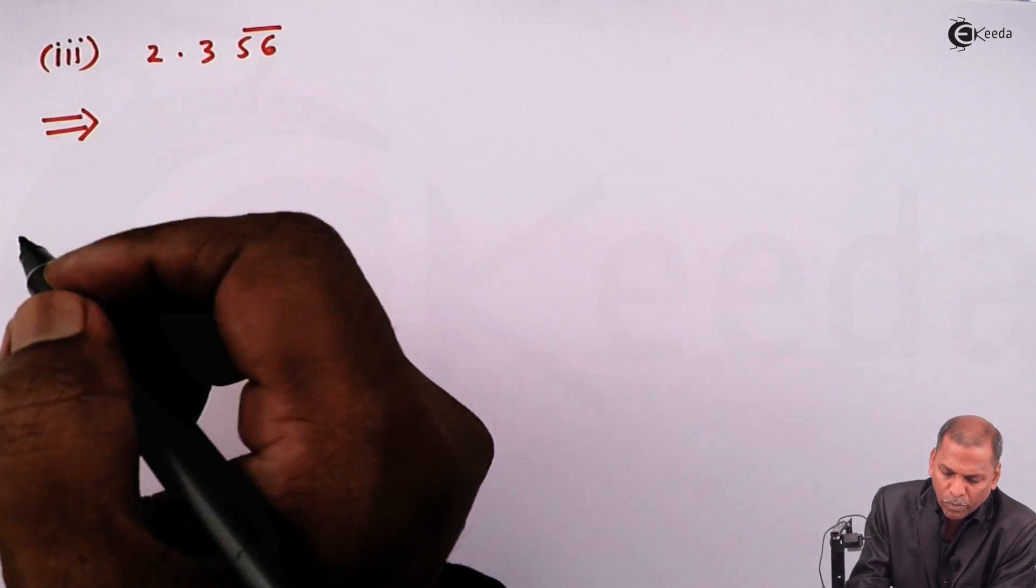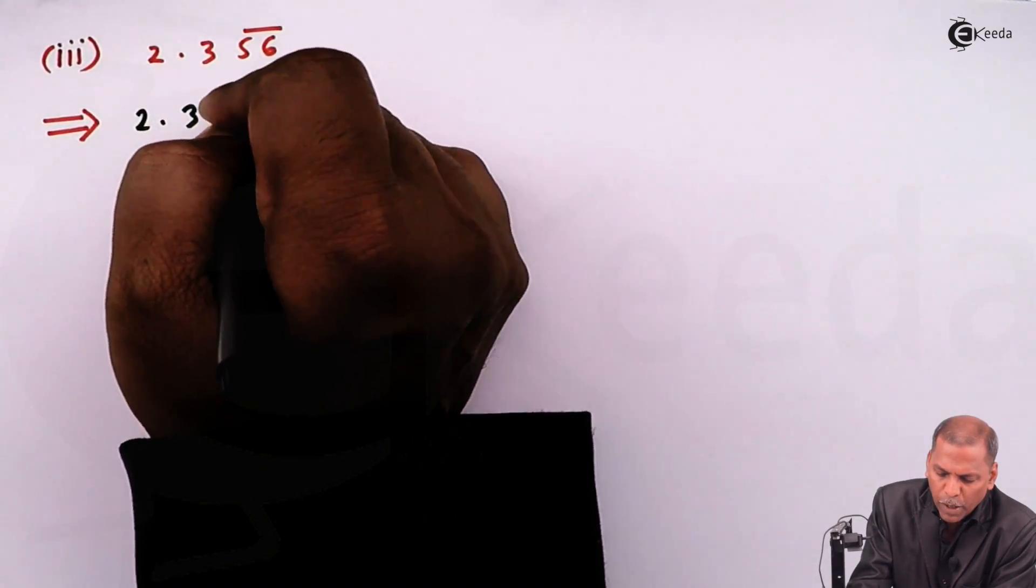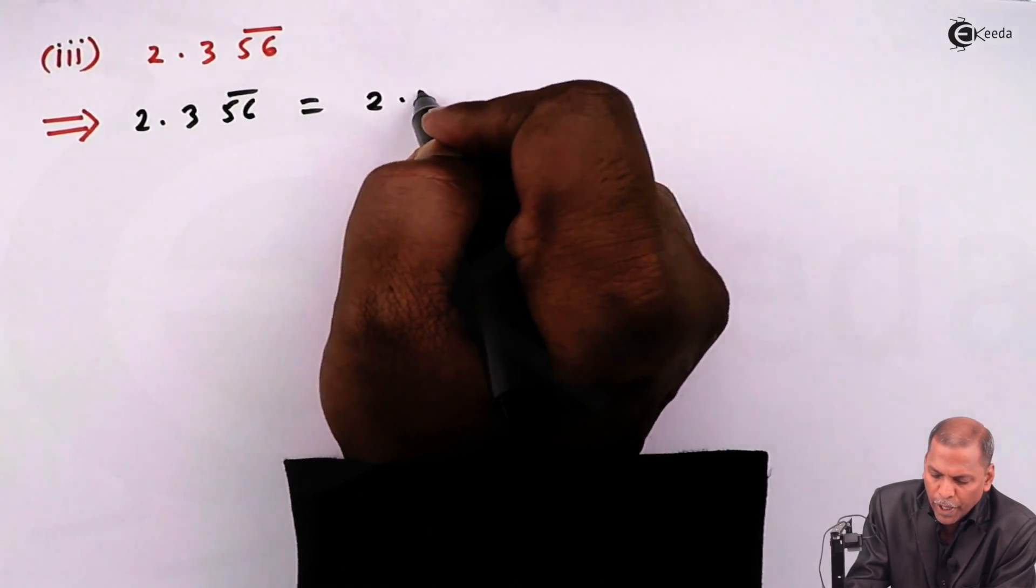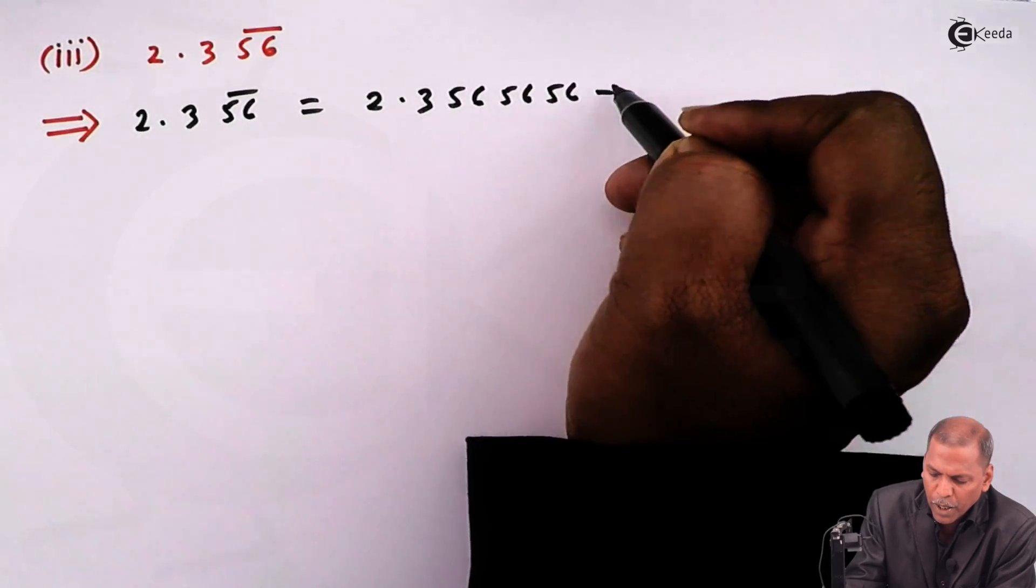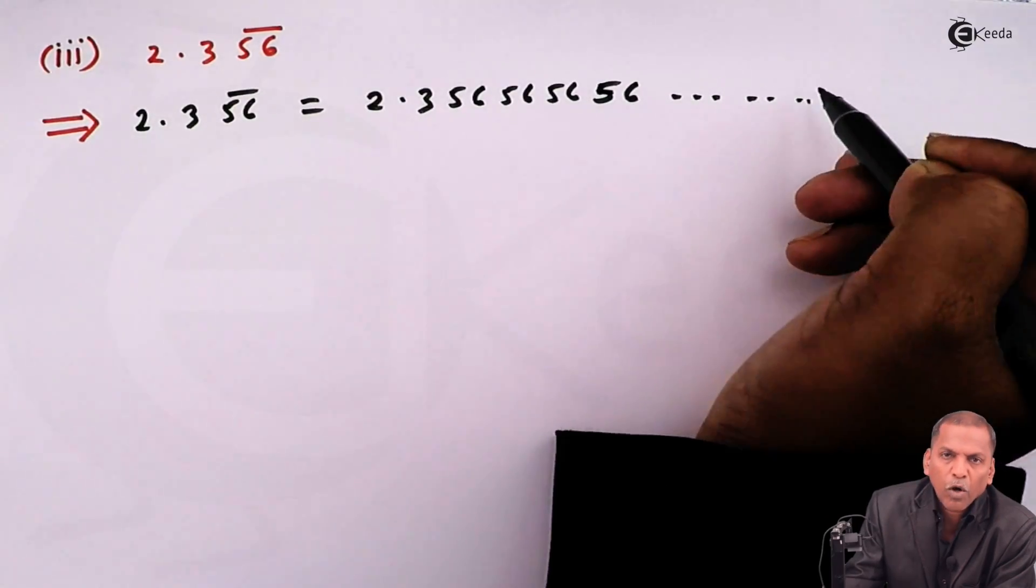The number 2.356 bar can be written as 2.356565656 going on.